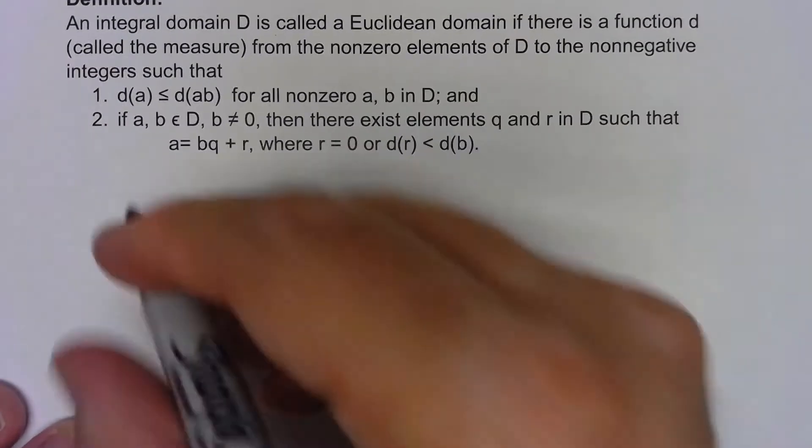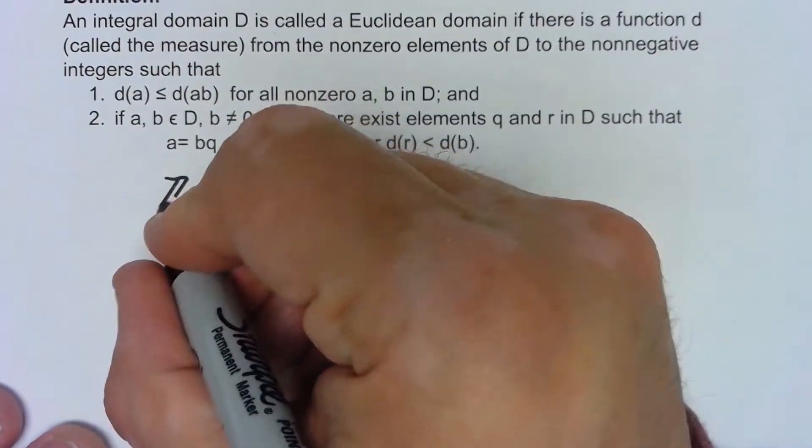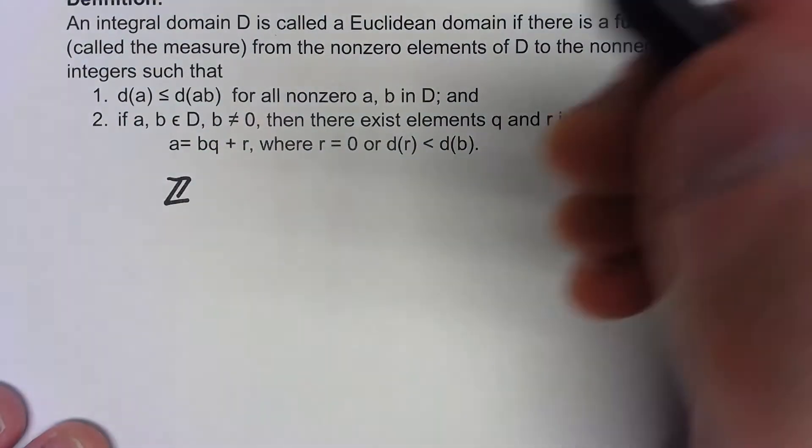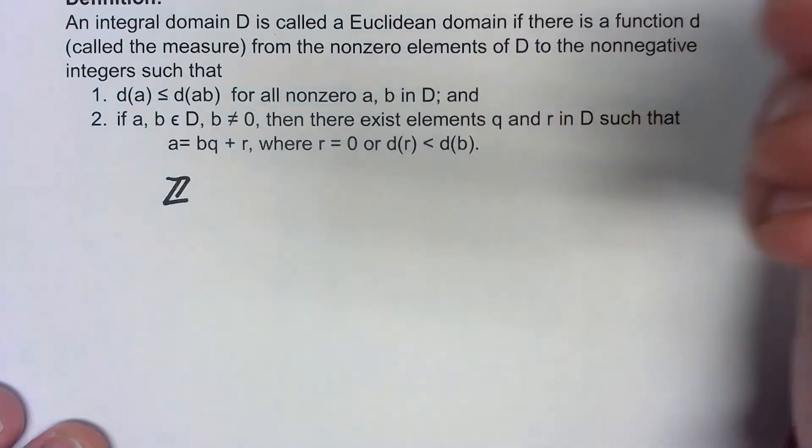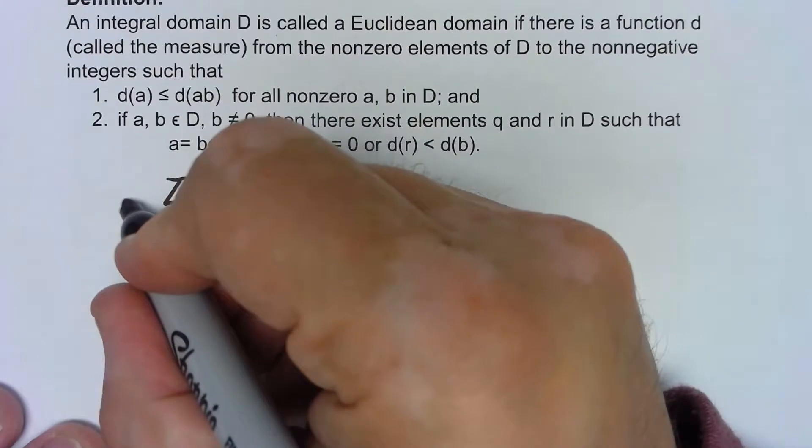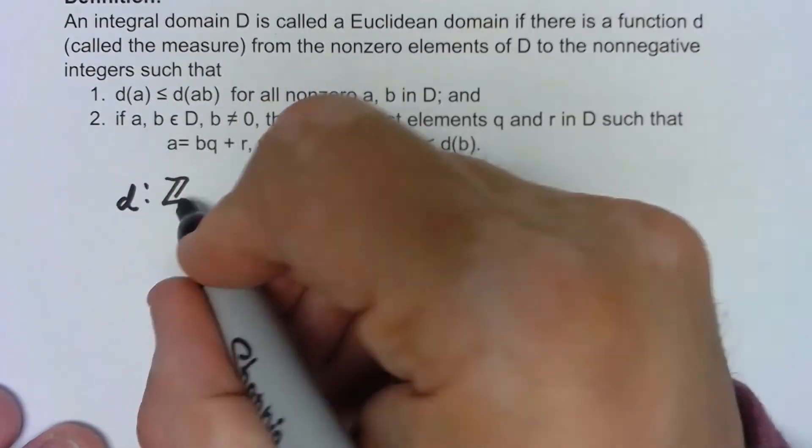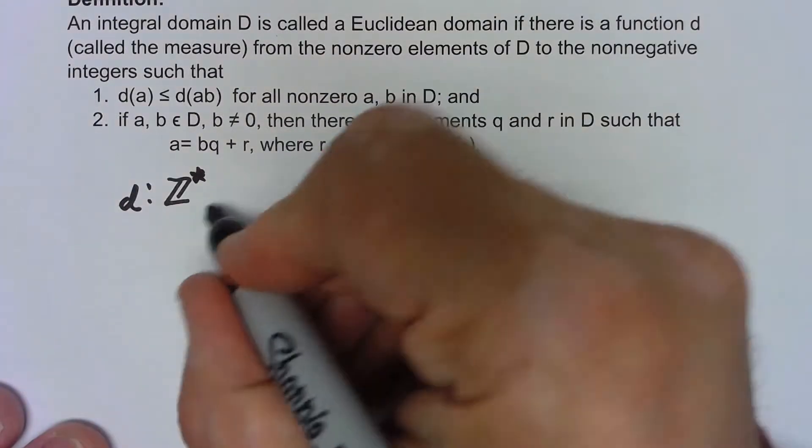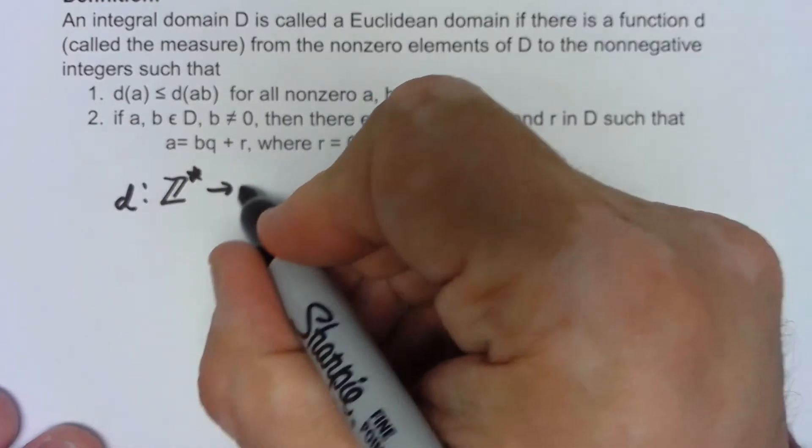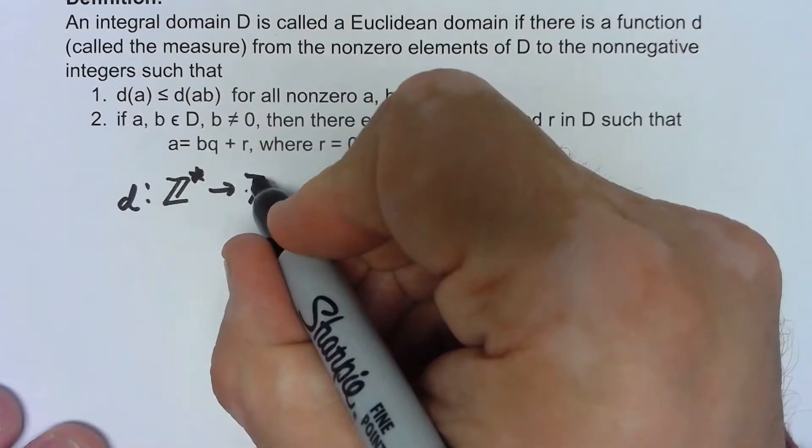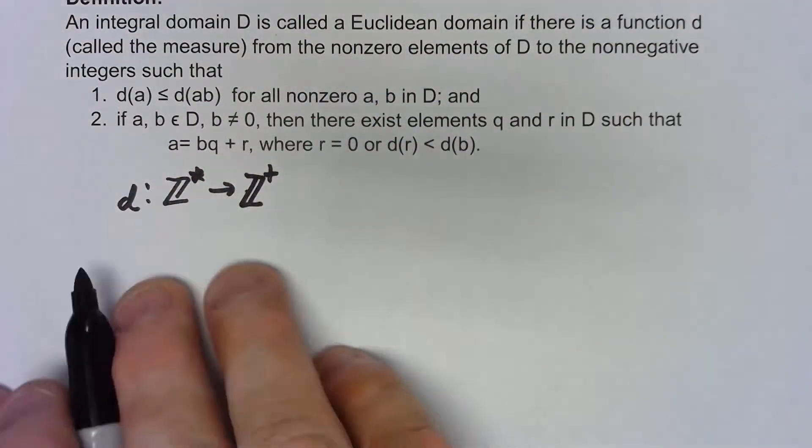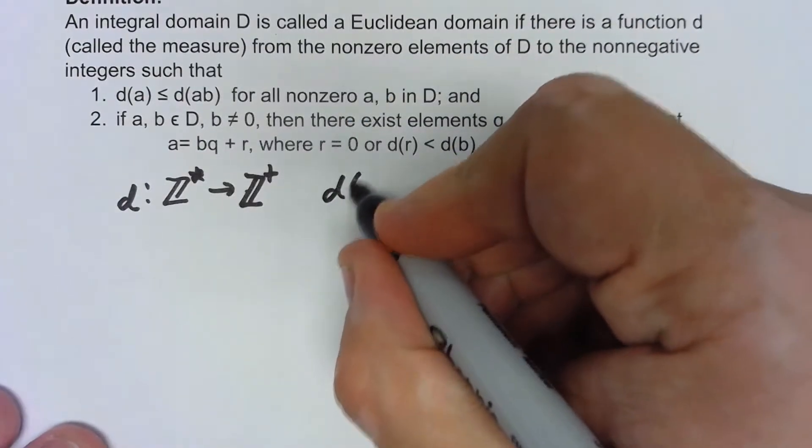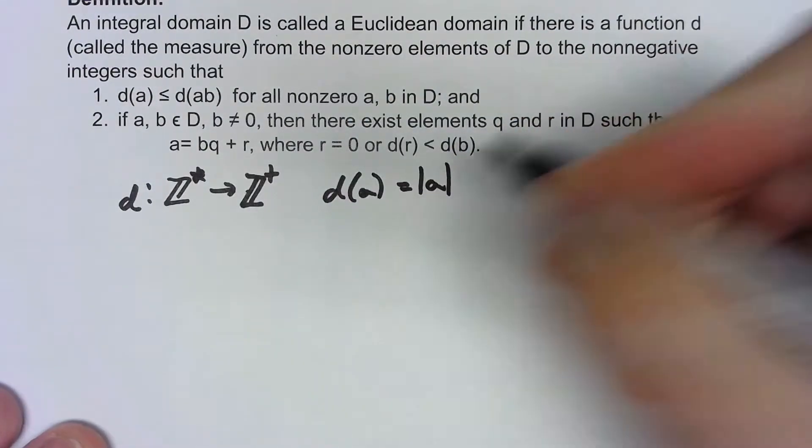Once again the integers are one of the inspirations for this. If I say that I've got a function d from the non-zero elements of Z to the non-negative integers, we're going to define that to be d(a) is the absolute value of a.